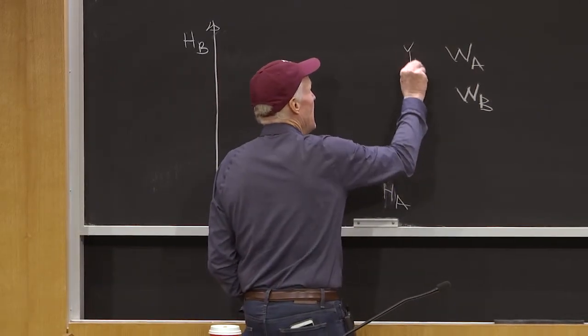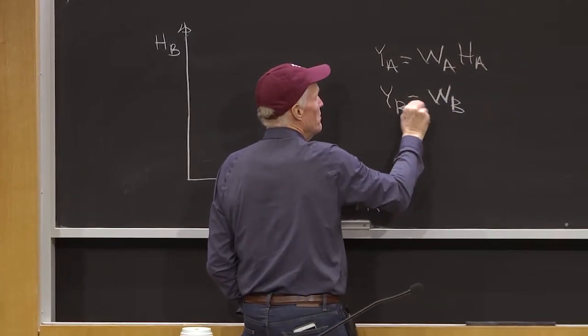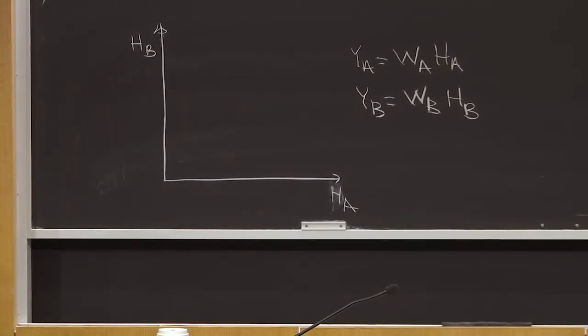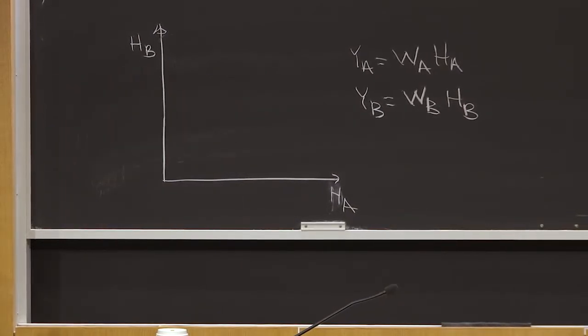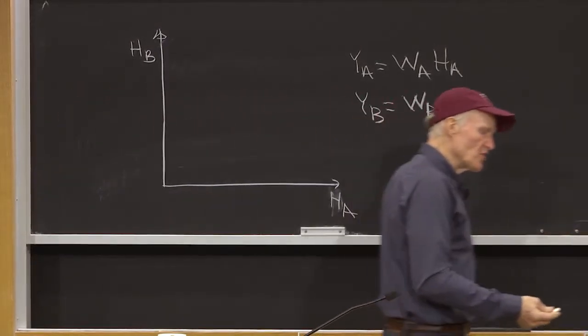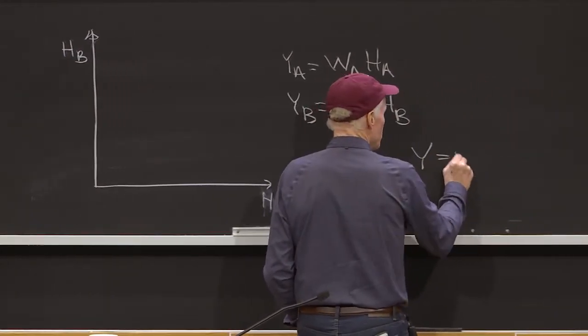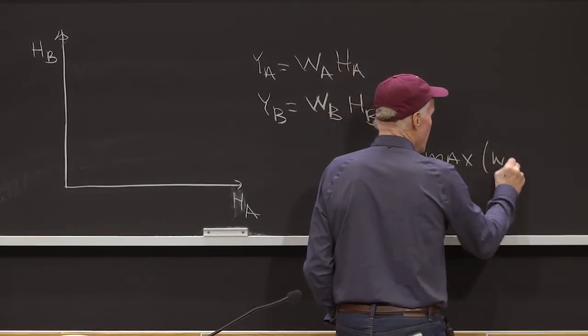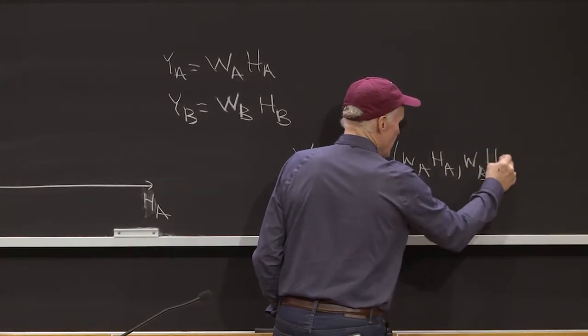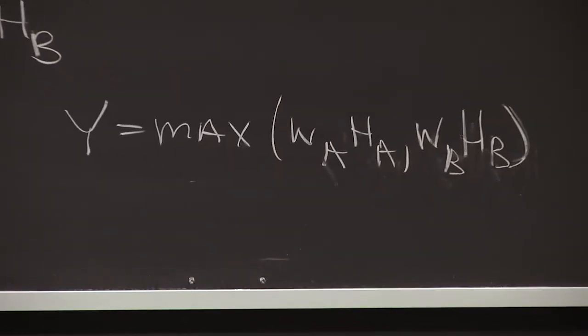Your income in A would be WA*HA, and your income in B would be WB*HB. That would be your earnings. If you work in A, you get WA*HA, and if you work in B, you get WB*HB. And if people are sorting themselves according to comparative advantage, you would say Y would be the max of WA*HA, WB*HB. That would be how much you earn in equilibrium.